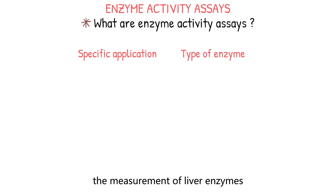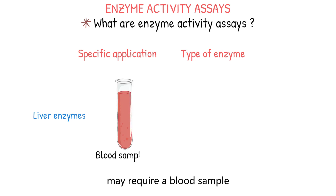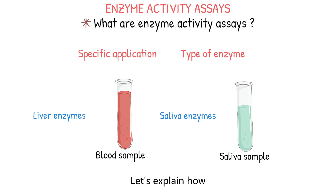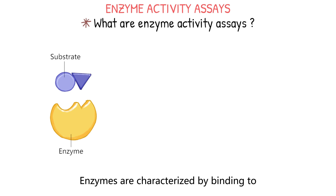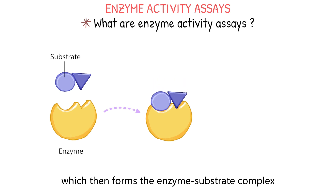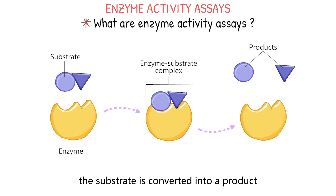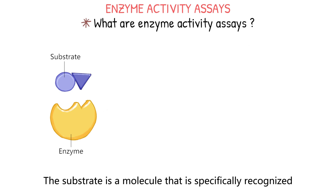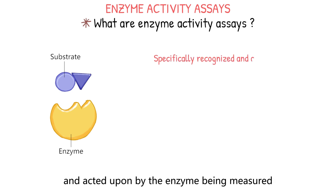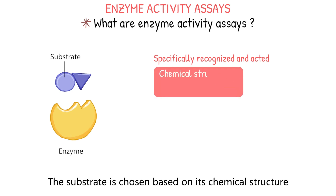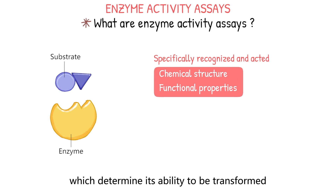For instance, the measurement of liver enzymes may require a blood sample, while the measurement of enzymes in saliva may require a saliva sample. Enzymes are characterized by binding to a specific substrate or group of substrates, which then forms the enzyme-substrate complex. Within a specific reaction, the substrate is converted into a product. The substrate is a molecule that is specifically recognized and acted upon by the enzyme being measured.